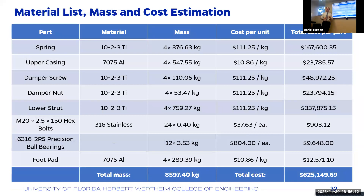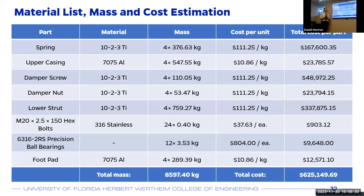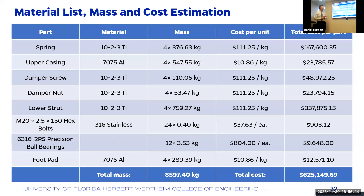To wrap up, we looked at the mass and cost of implementation. We have all parts needed for our design listed with their respective mass, cost per unit, and total cost. The cost per unit is determined from stock material prices and does not include manufacturing costs. Off-the-shelf parts such as hex bolts and precision ball bearings are priced from online manufacturers. Our total mass came out to approximately 8.5 tons, and the total cost came out to $625,000.